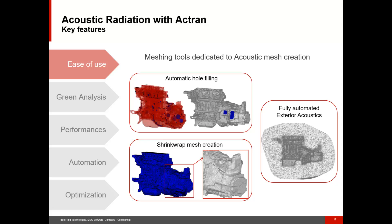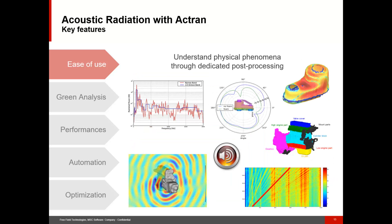This means that the only mesh required to run the calculation is a closed wrap surface around your vibrating component. This automatic exterior mesh creation does not only work for simple cases — you can ask Actron to mesh the complete domain around an entire car body, for example. The last item regarding ease of use is about the post-processing capabilities. When you run an acoustic radiation analysis with Actron, you have access to standard acoustic results such as the sound pressure level at a microphone location or the radiated acoustic power.